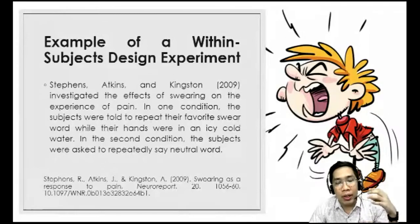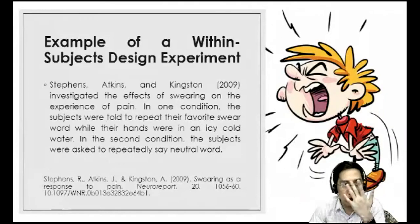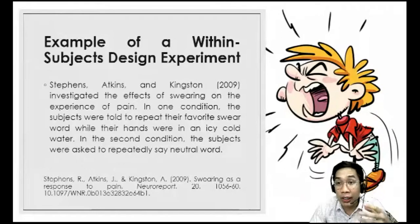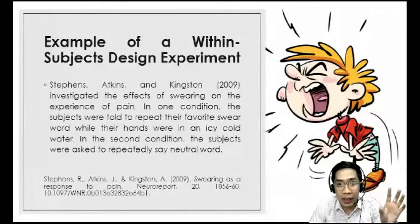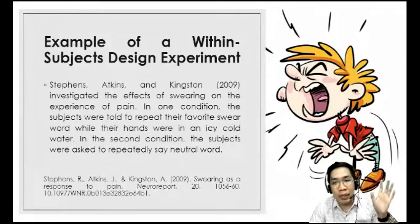In the swearing study, there were two conditions — two levels of the IV: swear words and neutral words. The first condition was administered, an interval was given for subjects to rest, and then the second condition was administered to the same subjects.